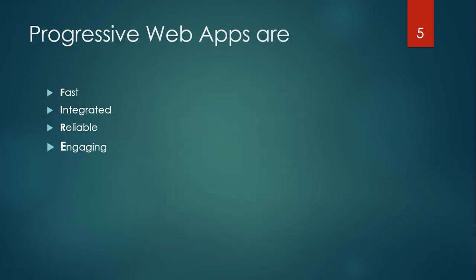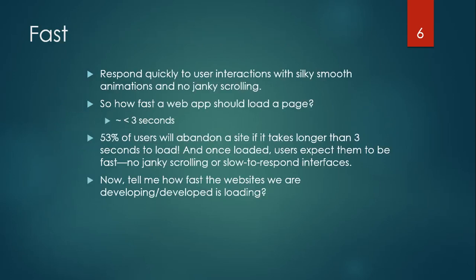Now let's deep dive into today's topic — Progressive Web Apps. These are the properties of Progressive Web Apps. Basically it is F-I-R-E: F for Fast, I for Integrated, R for Reliable, and E for Engaging.